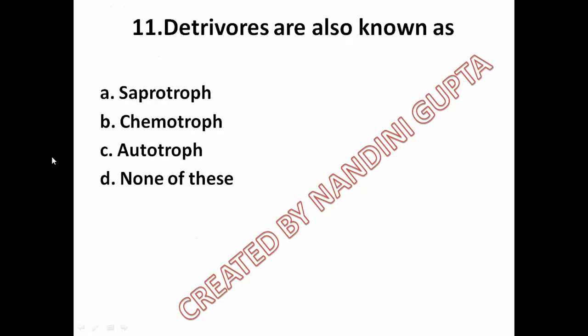Next: detritivores are also known as option A saprotroph, option B chemotroph, option C autotroph, option D none of these. The correct answer is option A, saprotroph.